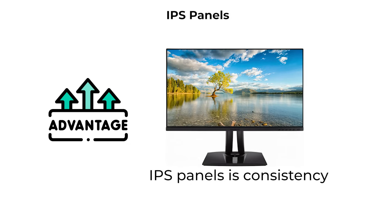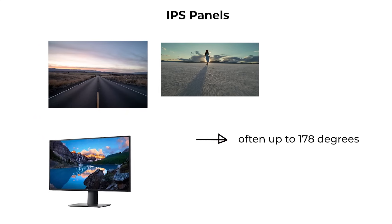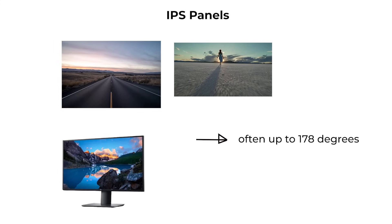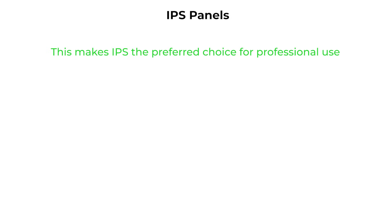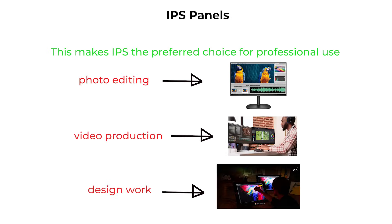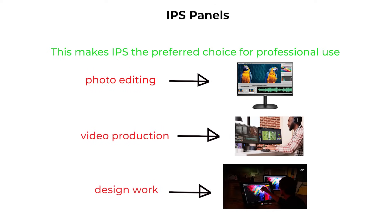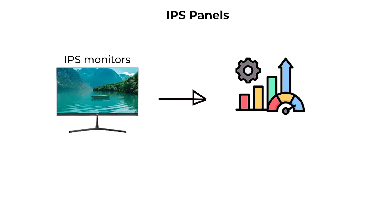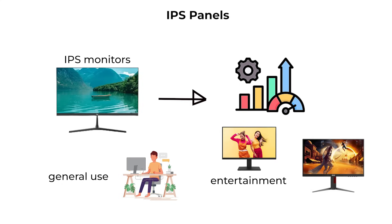The key advantage of IPS panels is consistency. Colors remain accurate even when viewed from wide angles, often up to 178 degrees horizontally and vertically. This makes IPS the preferred choice for professional use in photo editing, video production, and design work where precise color reproduction is critical. IPS monitors also perform very well for general use and entertainment, since the picture does not shift when the viewer moves slightly off-center.